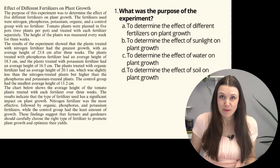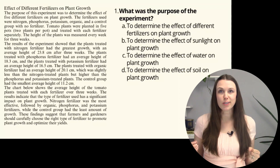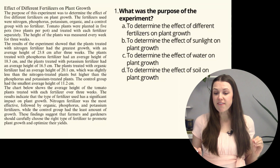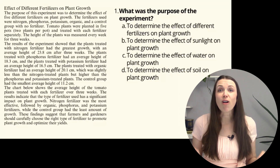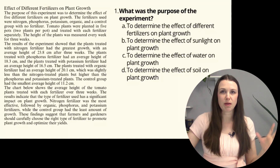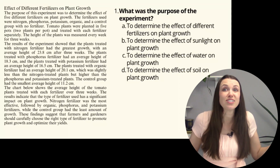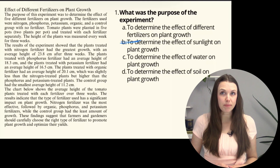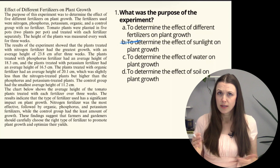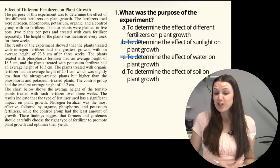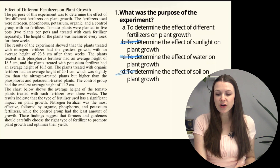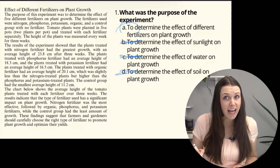Question 1: What was the purpose of the experiment? The answer is to determine the effect of different fertilizers on plant growth. It was talking about different fertilizers. The other options — to determine the effect of sunlight, water, or soil on plant growth — were not discussed in the experiment at all. Those would have been completely different experiments. So the answer is A.